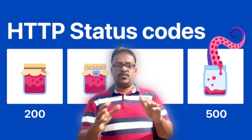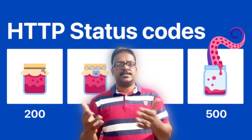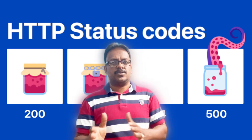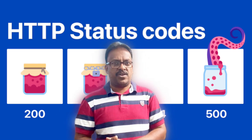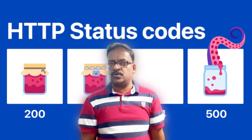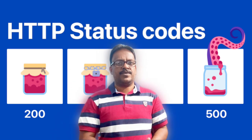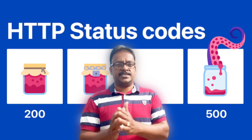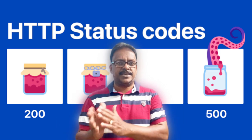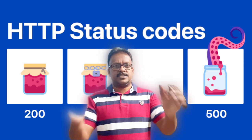These two responses — 300 and 301 — are not error responses; they are successful responses that fall under redirection. That covers the 300 series HTTP status codes.